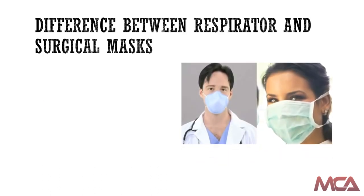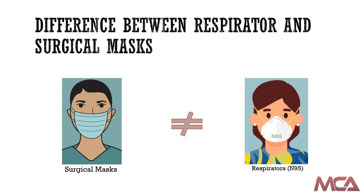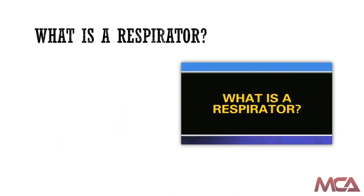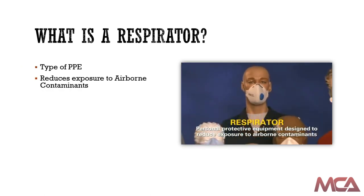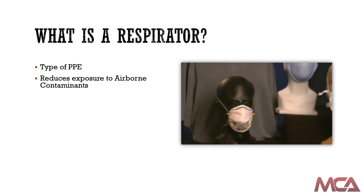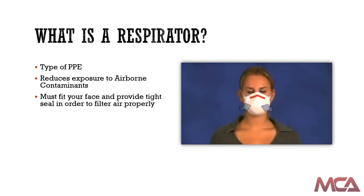Let's talk about the differences between a respirator and surgical masks. Surgical masks do not provide the same protection as respirators. Both are types of PPE that can be used to protect workers in healthcare settings; however, a surgical mask is not a respirator. A respirator is a type of personal protective equipment designed to reduce your exposure to airborne contaminants. Respirators are available in different types and sizes, and the appropriate respirator will be individually selected to fit your face and to provide a tight seal. A proper seal forces inhaled air to be pulled through the respirator's filtering material, not through gaps between your face and the respirator.